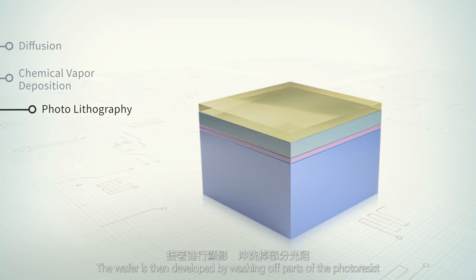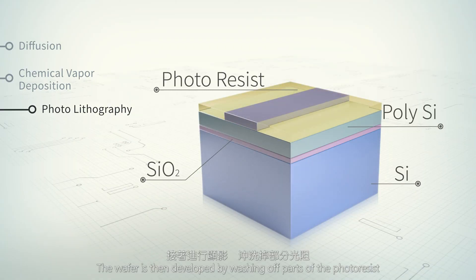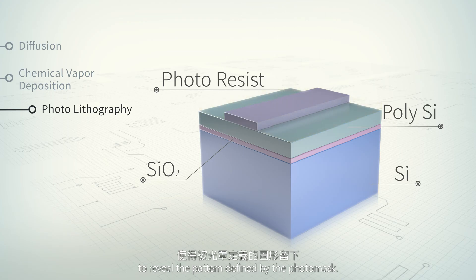The wafer is then developed by washing off parts of the photoresist to reveal the pattern defined by the photomask.